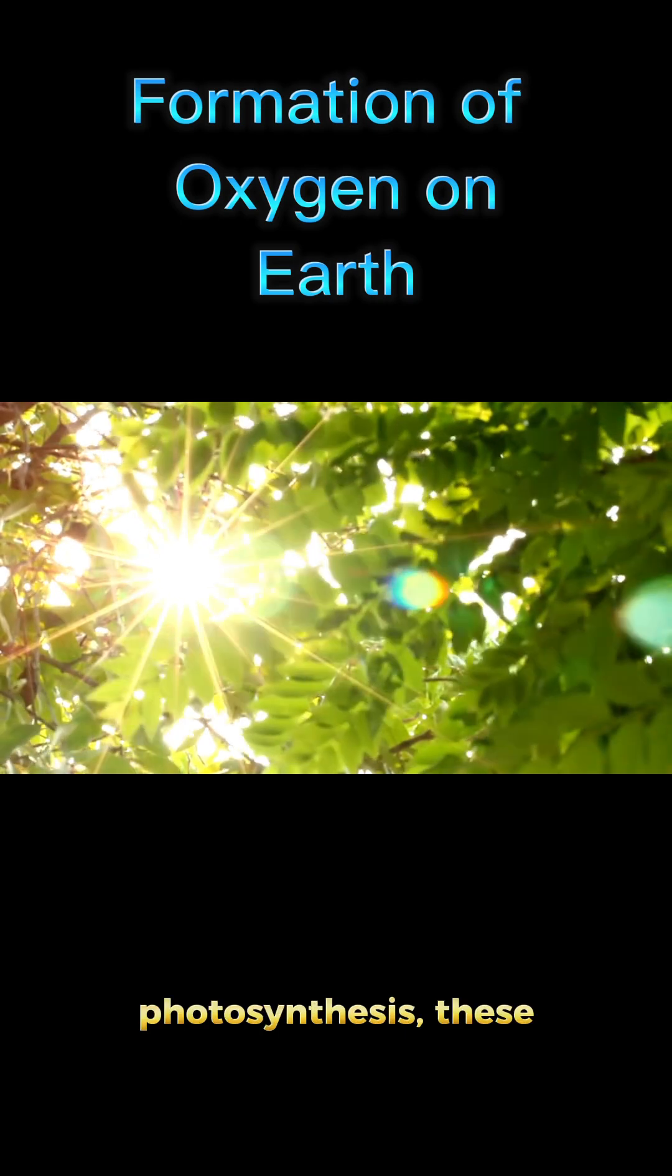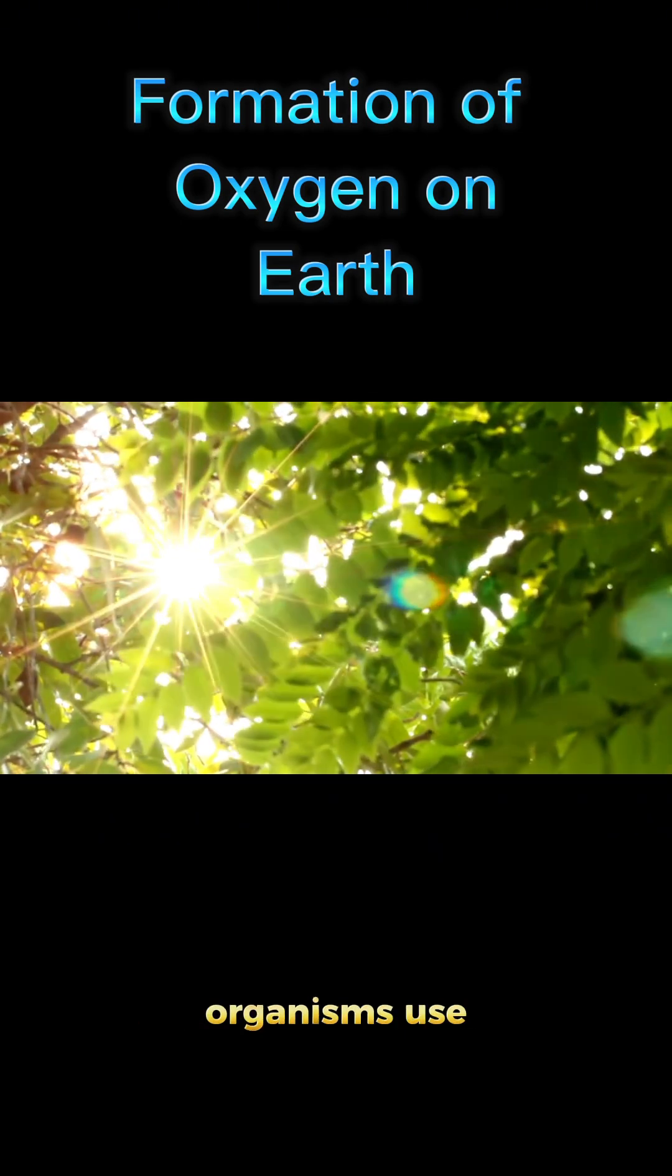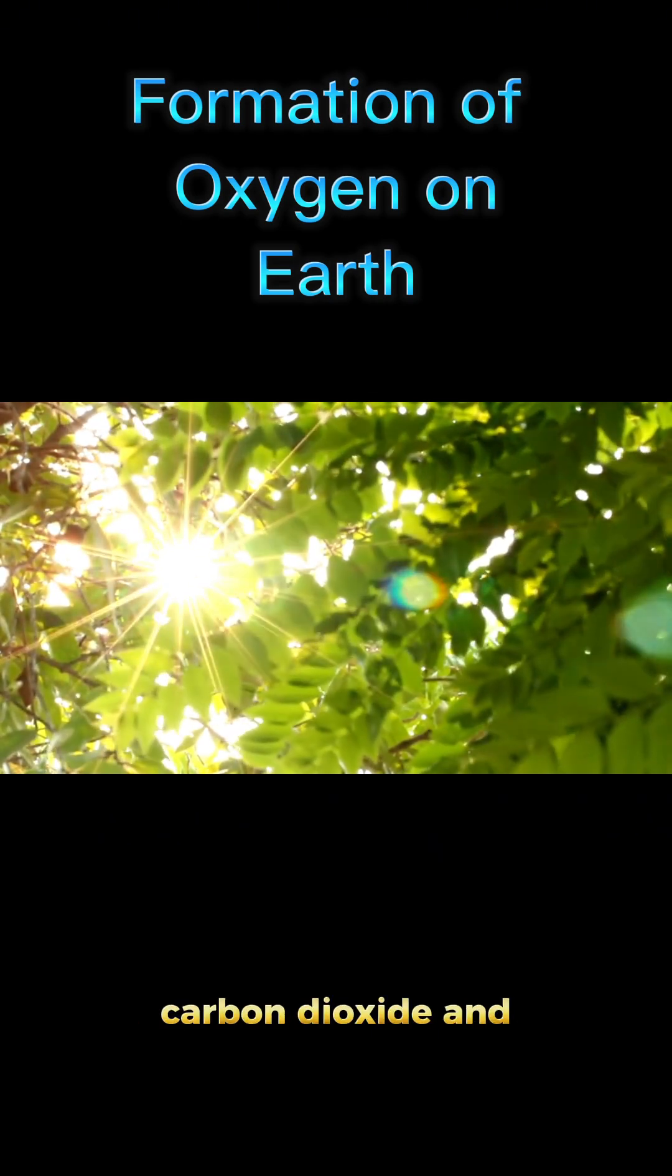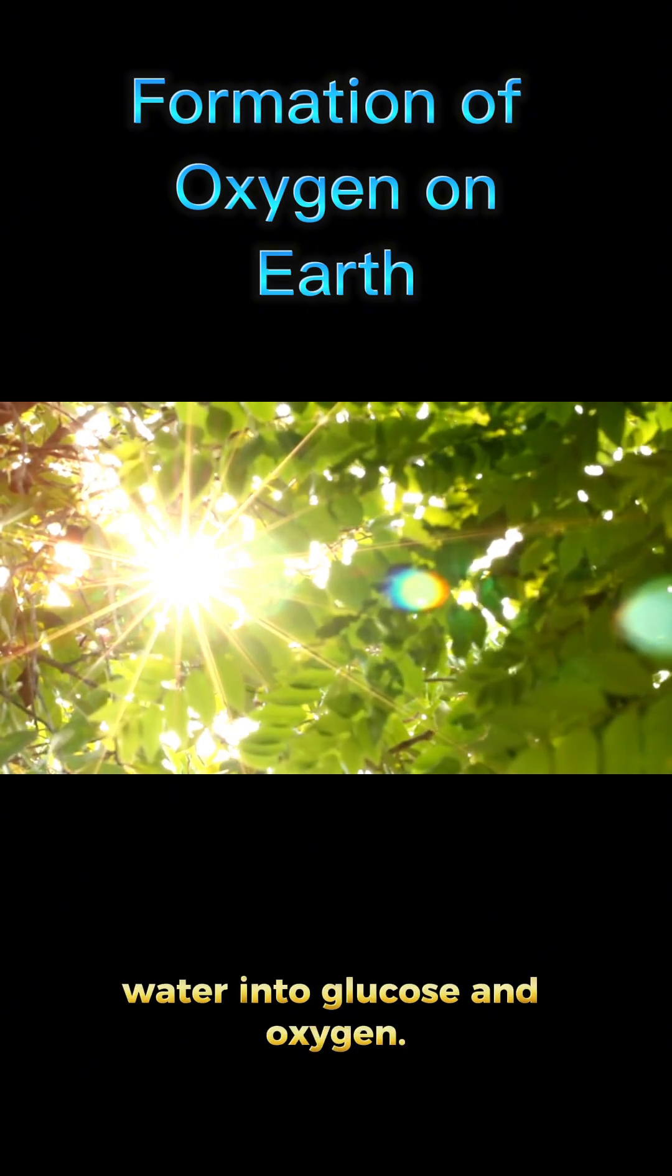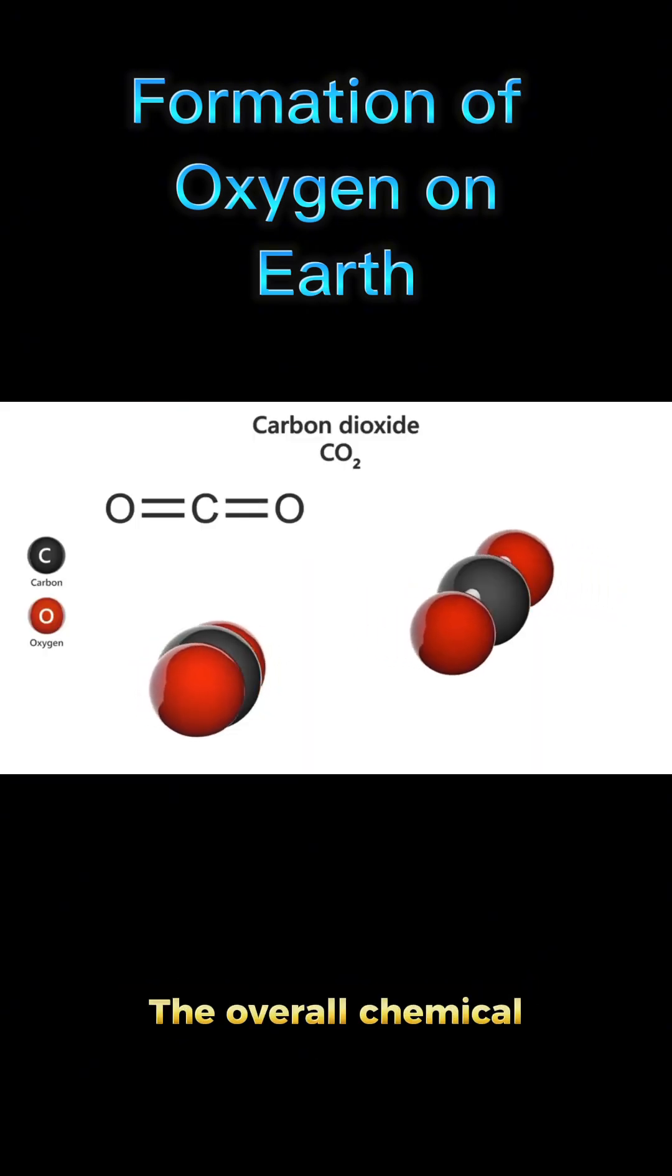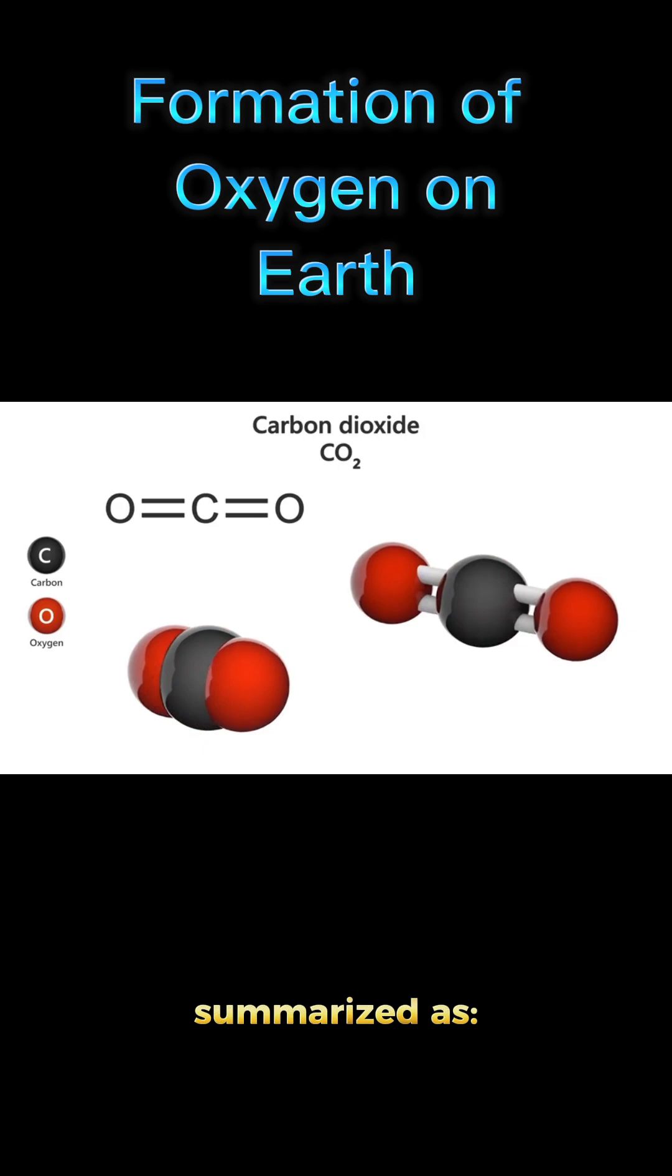During photosynthesis, these organisms use sunlight to convert carbon dioxide and water into glucose and oxygen. The overall chemical reaction can be summarized as follows.